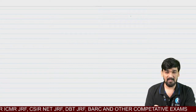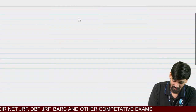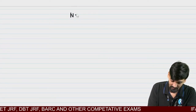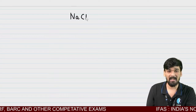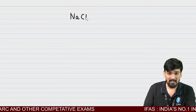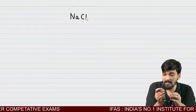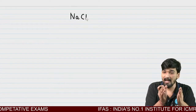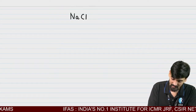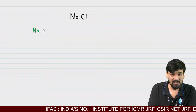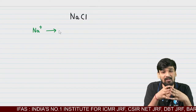Let us discuss what is the NaCl structure and the important points regarding it. A crystal structure means a regular arrangement of atoms or an array. Here Na+ exists in a crystal and it will go into the octahedral voids.